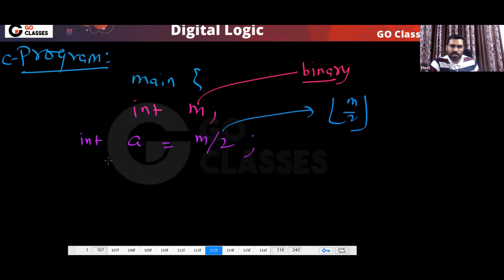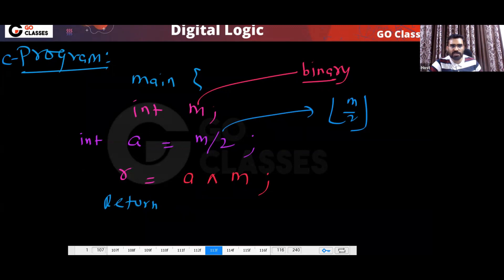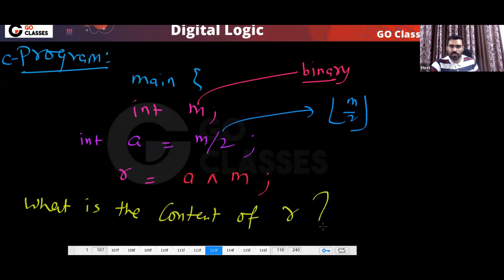Then they can put some for loop, or maybe they can do: R is equal to bitwise XOR of A and M — the symbol for bitwise XOR is the caret (^). So they can give you A XOR M. They will ask you what is the return value of R, or what is the content of R? The answer is: the content of R will be the Gray code of M.